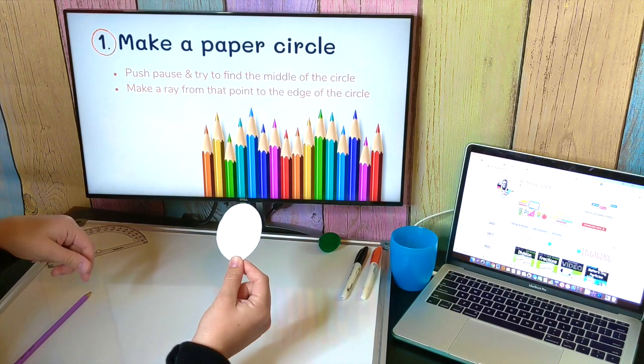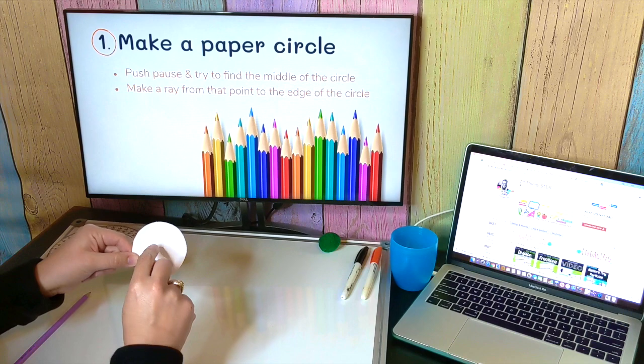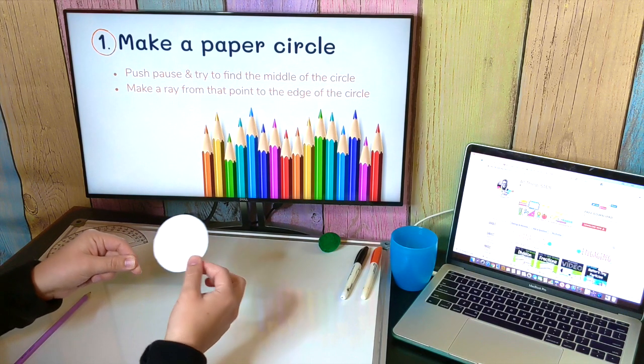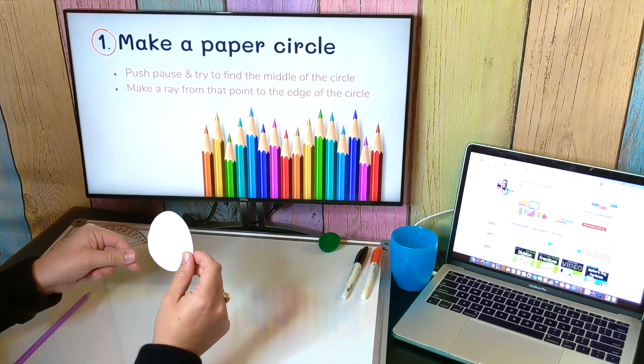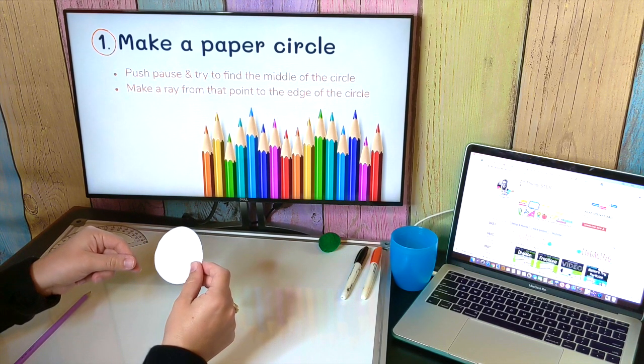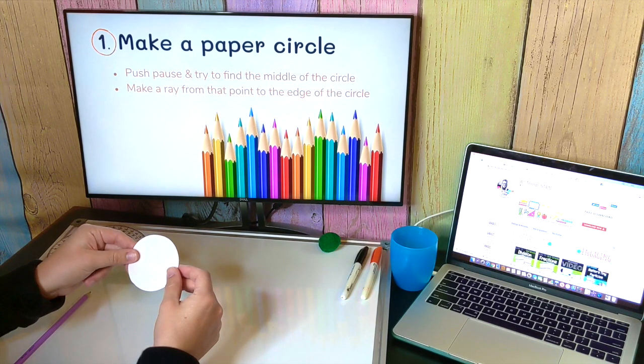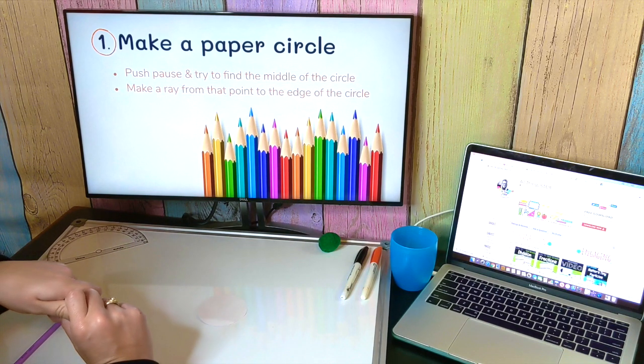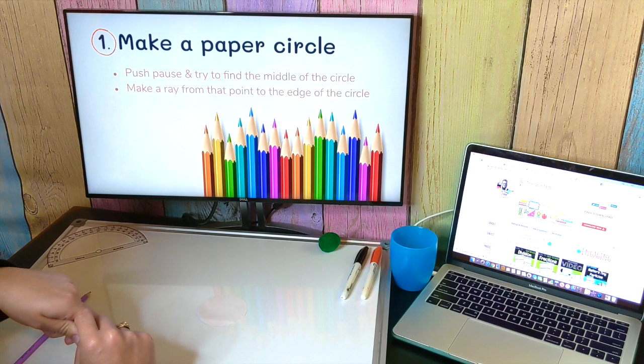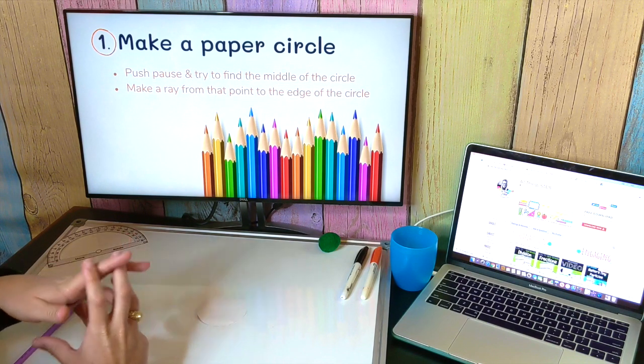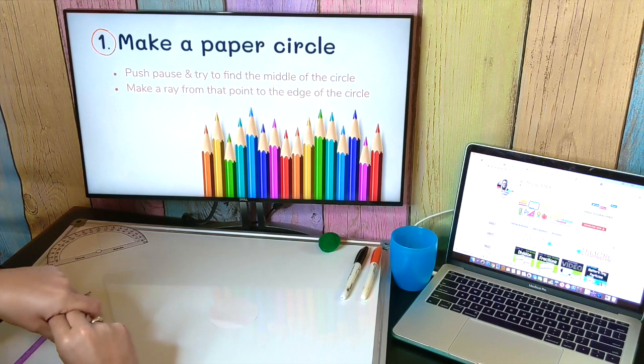Once you do that, I want you to figure out a way to find the exact middle of your circle. Not just guessing, not just putting a dot there, but actually figure out a way to find the middle. Once you do that, I want you to draw a ray from that middle point to the edge of your circle. Go ahead and pause the video while you work out your first part.